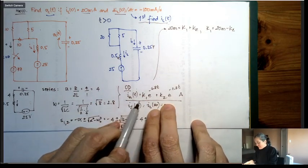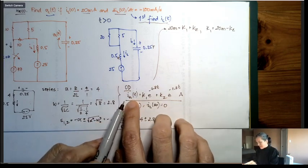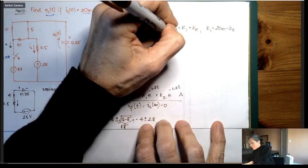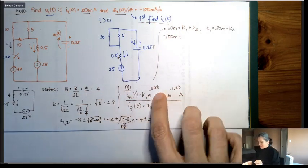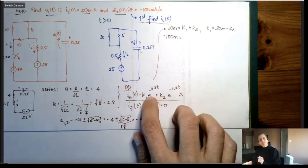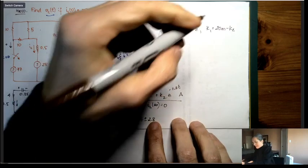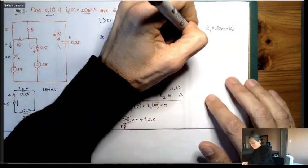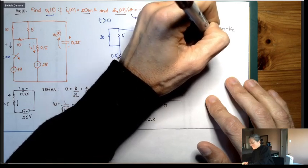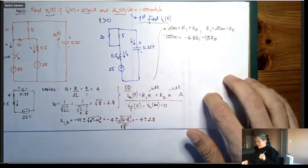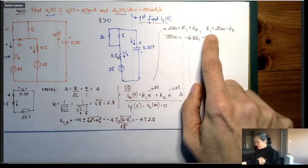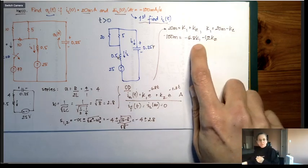Taking the derivative of IL(t) and evaluating at t = 0 gives: dI/dt(0) = −100 milliamps = −6.8·k1 − 1.2·k2. I now substitute k1 = 20 milli − k2 into this equation to solve for k2.